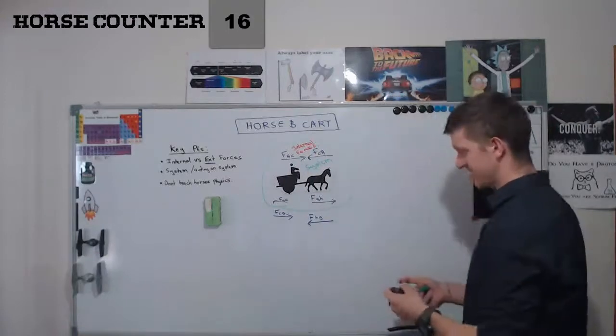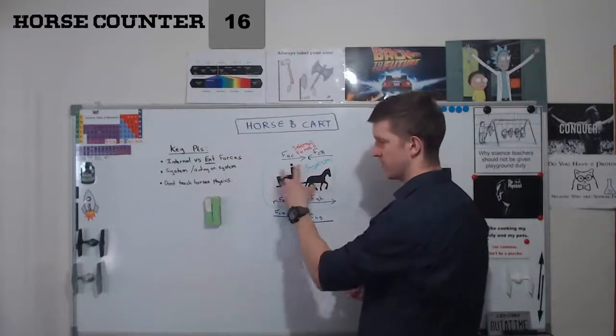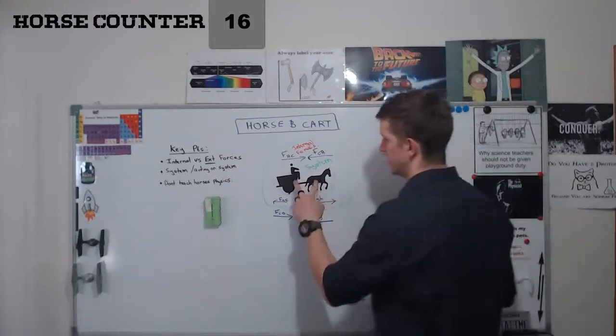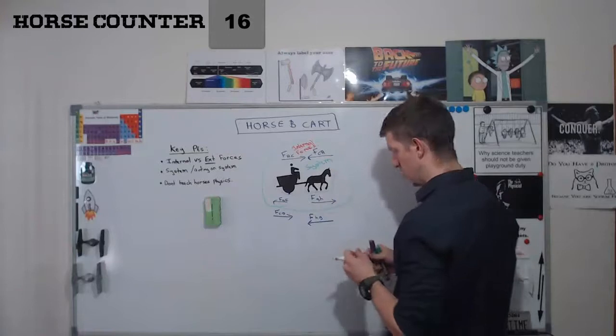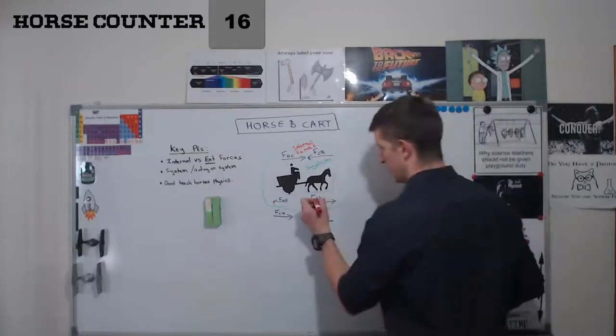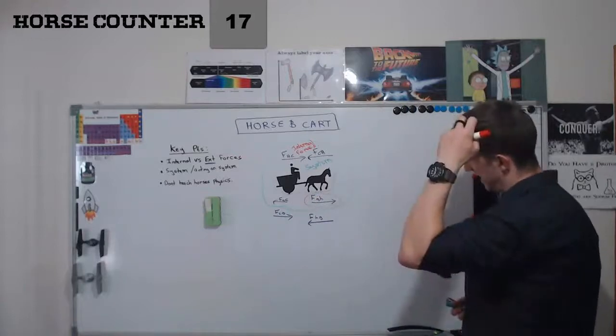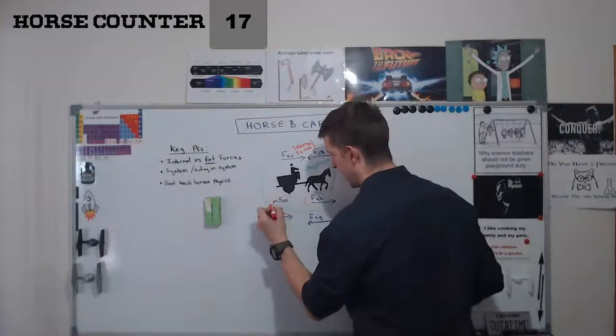The only external forces that I need to consider are the ones that acting on the system from something outside. So if I look at this, what is acting on these objects that's not part of those objects? Well, I would have the force of the ground on the horse and I would have the force of the ground on the cart.